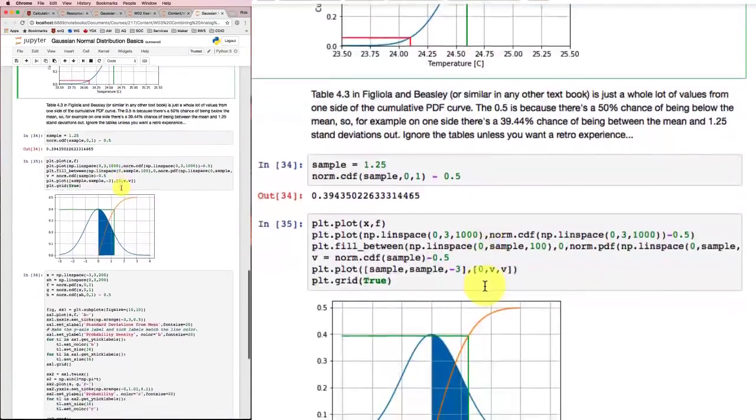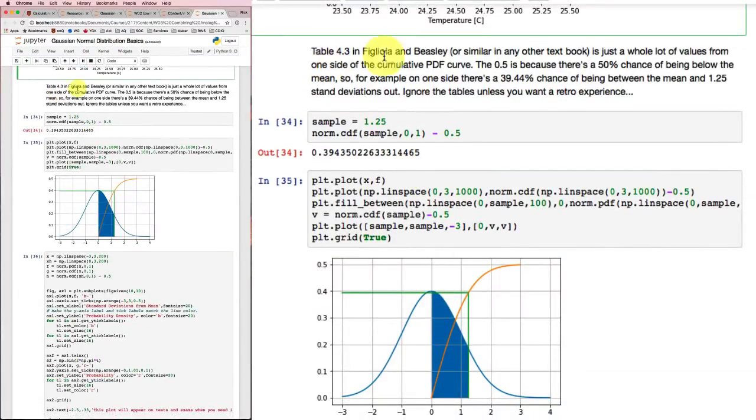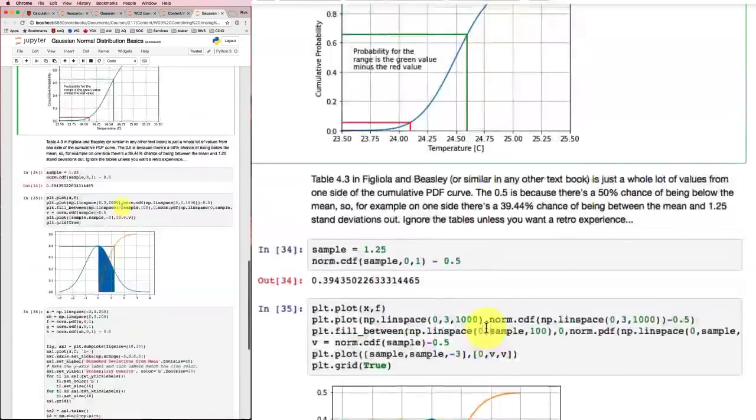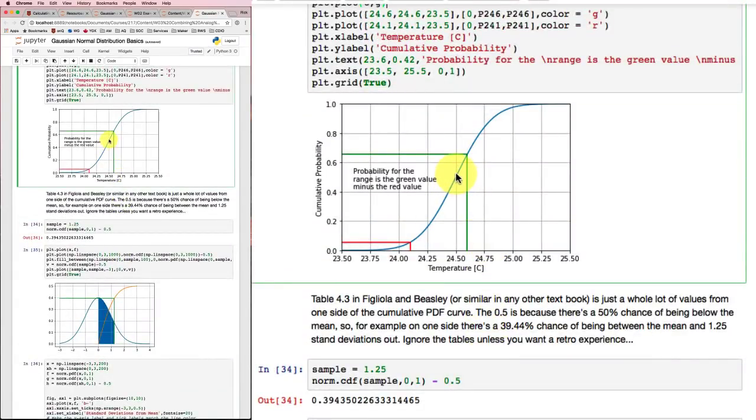Now in the course textbook Figliola and Beasley or any other similar textbook you'll find tables of these PDF and CDF curves. They're usually plotted in a half space. So plots of this integral here and the orange line is what you'll see. So it'll start from 0 and go up to a half instead of starting from way over here at 0 and going up to 1 up there. So this is just the top half of this curve here.